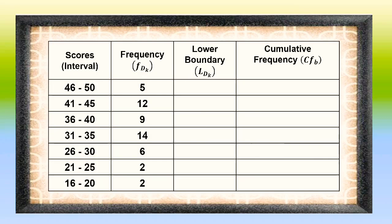This example is also used in solving for quartiles for group data. Just like what we did in our previous video lesson, we are going to compute for the lower boundary and the cumulative frequency of each class interval. To compute for the lower boundary of each class, we subtract 0.5 from the lower limit. So 16 minus 0.5 equals 15.5, and we follow the same procedure up to the 46 to 50 class interval, giving us 45.5.